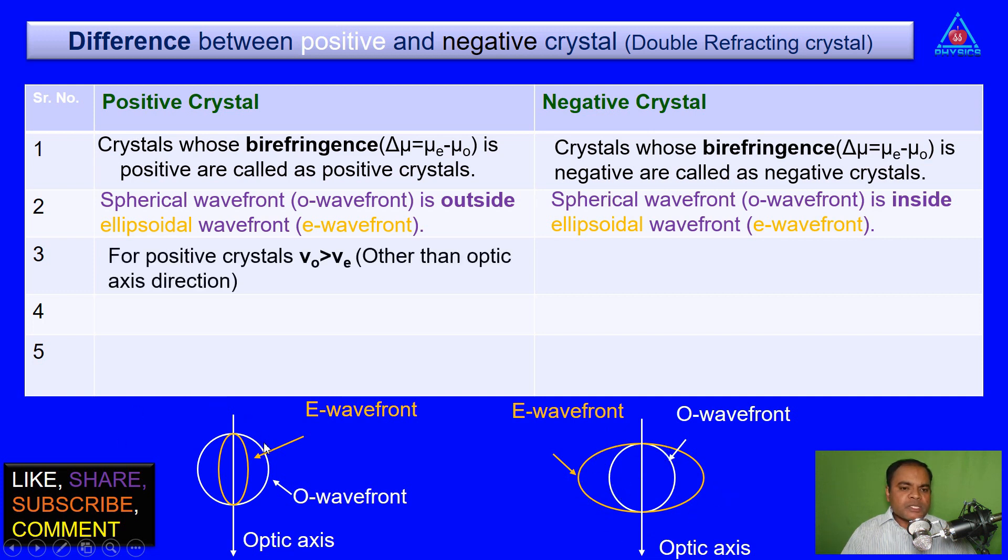For positive crystals, velocity of ordinary ray is greater than velocity of extraordinary ray, other than optic axis direction, because along optic axis direction the velocity of both the rays, that is the ordinary and extraordinary ray, is same.